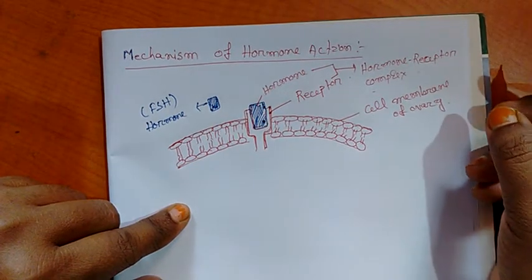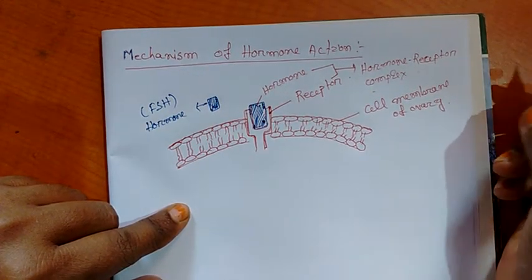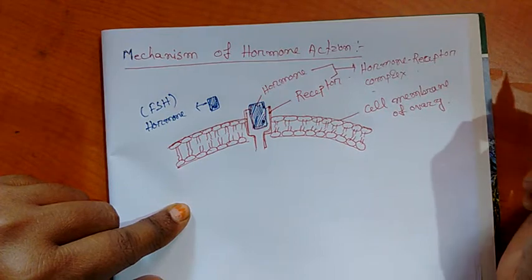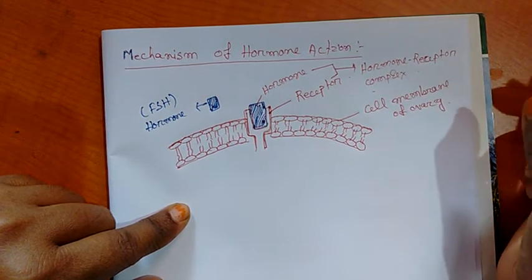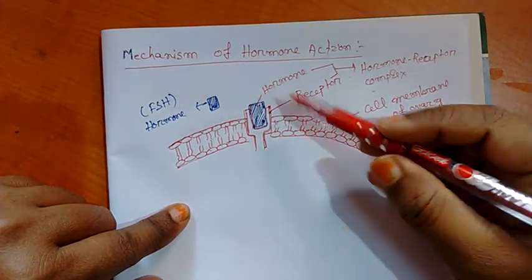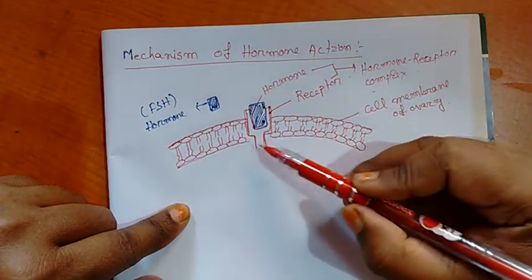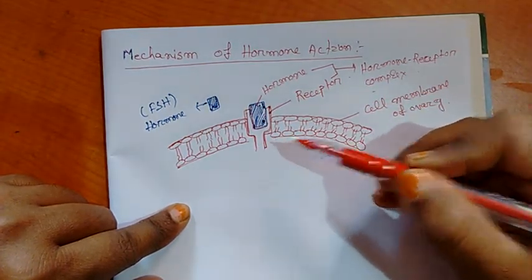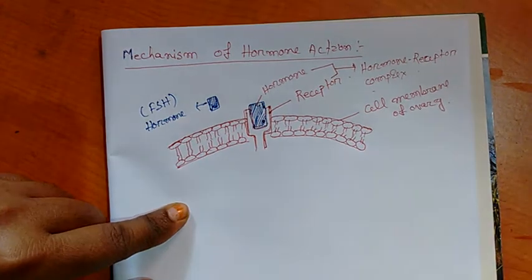Receptors are different types and specific for definite hormone like enzyme substrate complex. It forms hormone receptor complex. And receptors are found in the membranes of the cell.